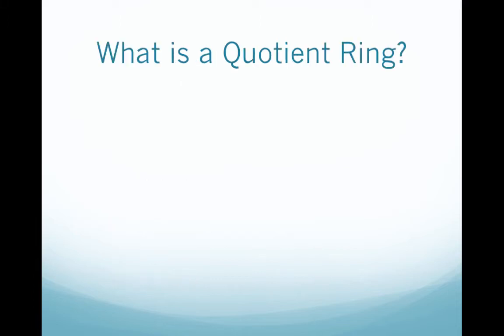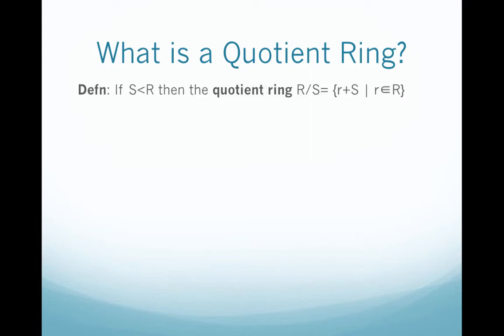Now you might be asking, what is a quotient ring? Well, similar to quotient groups, a quotient ring is a set of cosets. So if we have a subring S of R, then we can take any element in R and add it to our subring S. Since we want R mod S to be a ring, we need to define two operations: addition and multiplication.